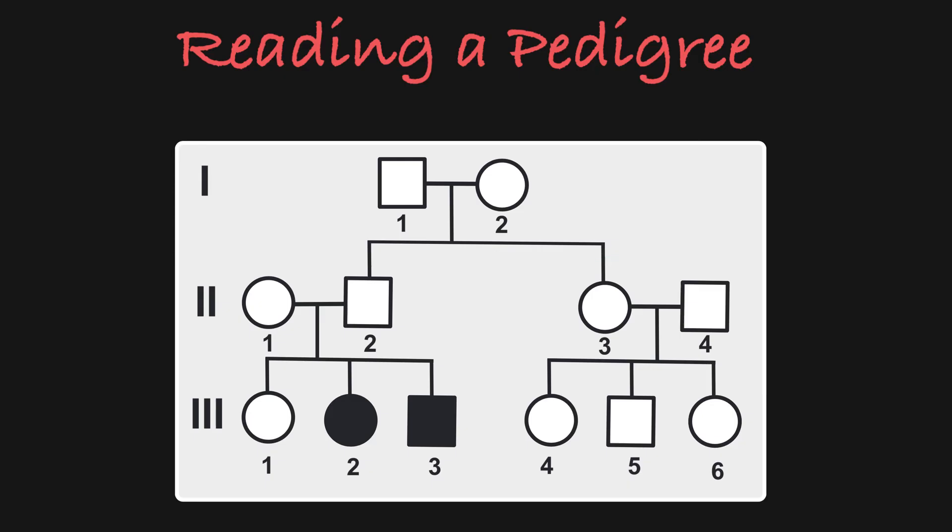Now this pedigree is showing the movement of sickle cell anemia. So we can see that just these two siblings have the disease, while the other members of the family do not.